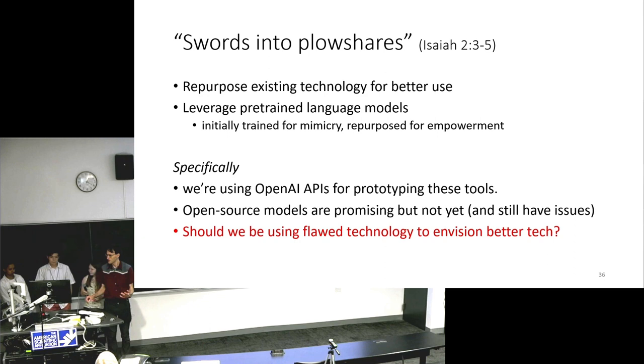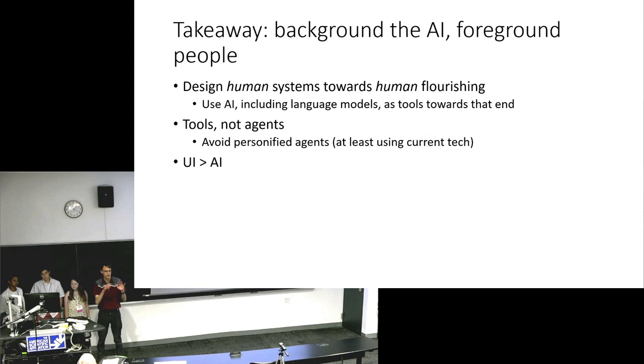All right. So overall, we're trying to repurpose existing technologies for better use. We leverage the pre-trained models, the OpenAI APIs, for example. But I'm actually wanting your input. Should we be using the flawed technology of the OpenAI APIs even as part of envisioning better tech, even though we have issues about how it's trained and such? But overall, the takeaway: should background the AI. No chatbot agents. Foreground people. Let's design human systems towards human flourishing. Use AI, including these language models, as tools. Let's build tools, not agents. Like, don't personify things. I wish chatbots would never have used the word I. This leads people. And I think there's a huge realm of opportunity in designing user interfaces, writer experiences, interfaces for people, rather than just trying to make the AIs better. So that's your takeaway. Happy to take questions.